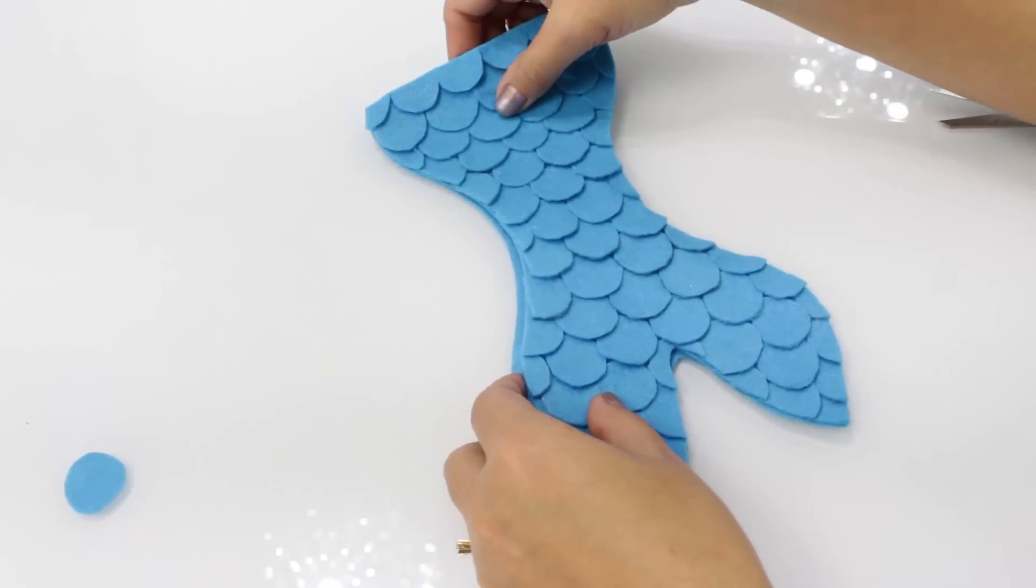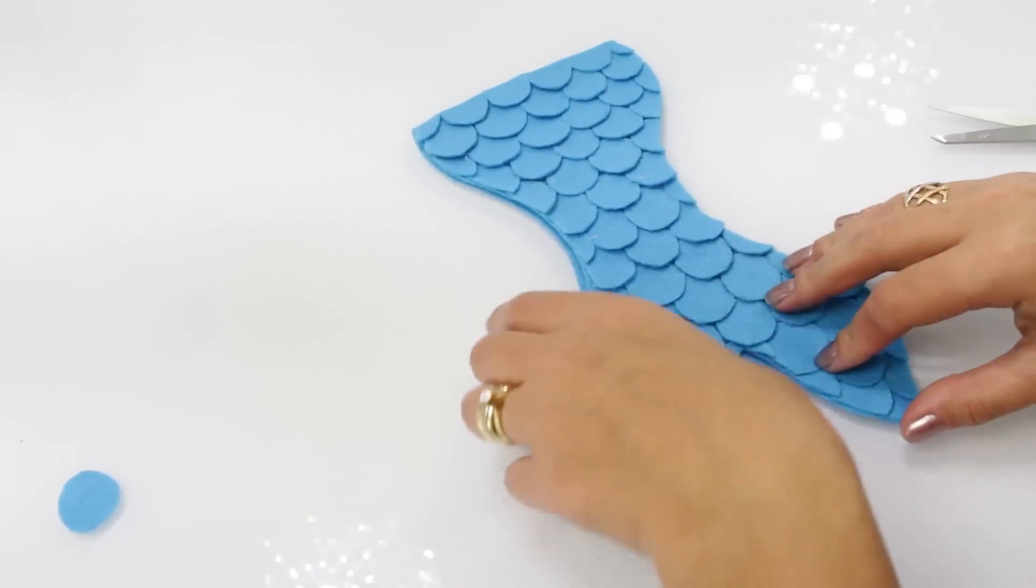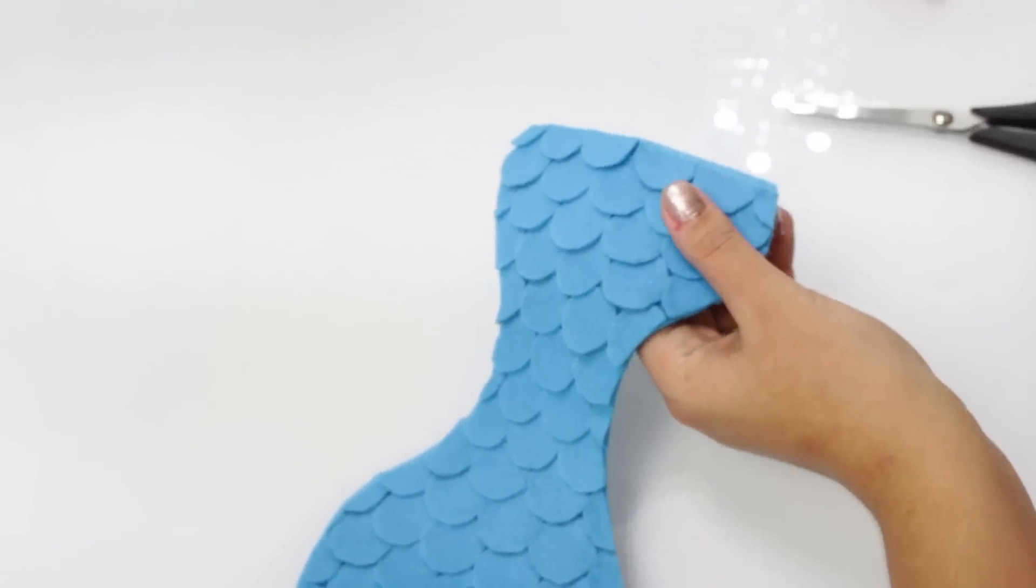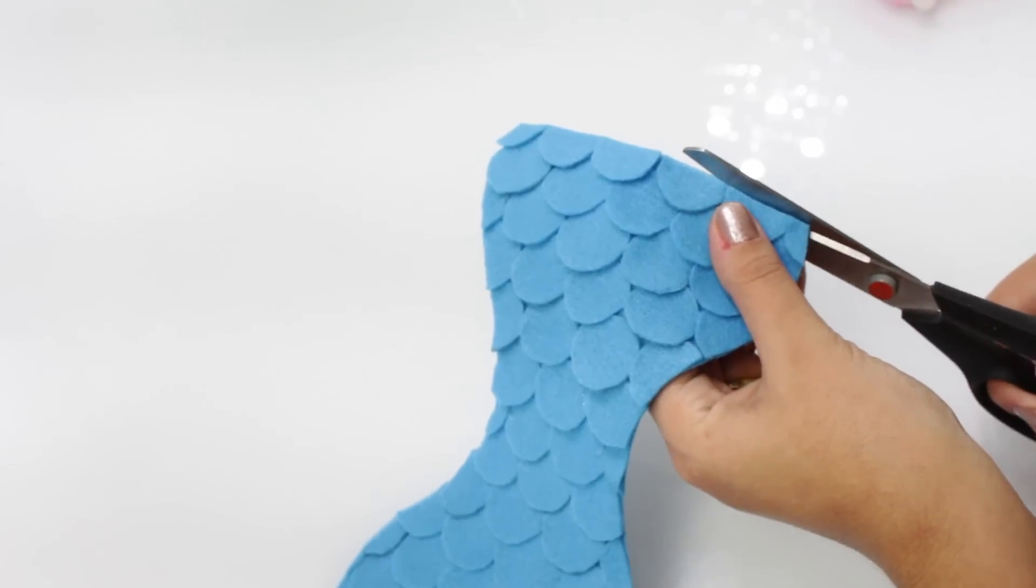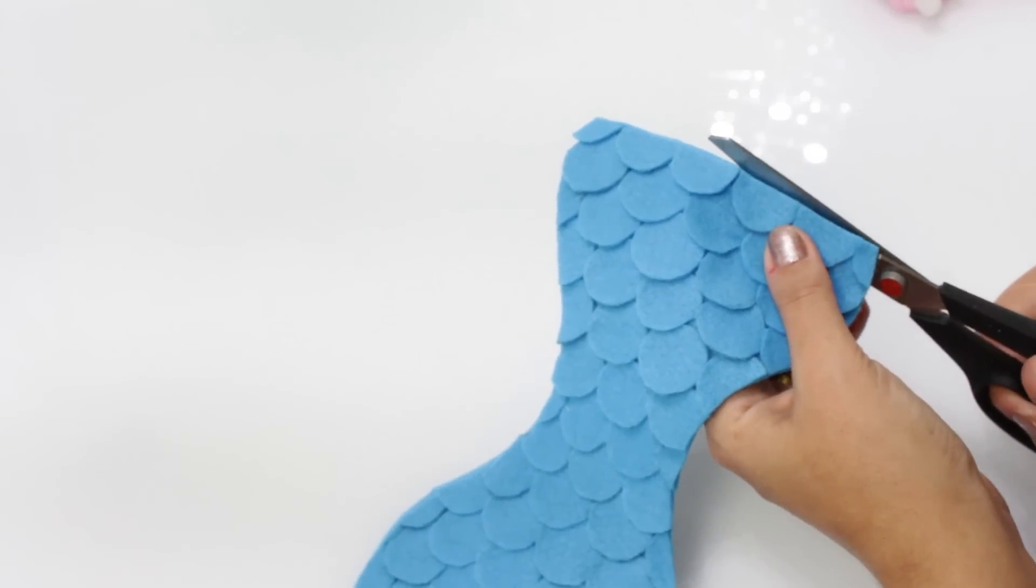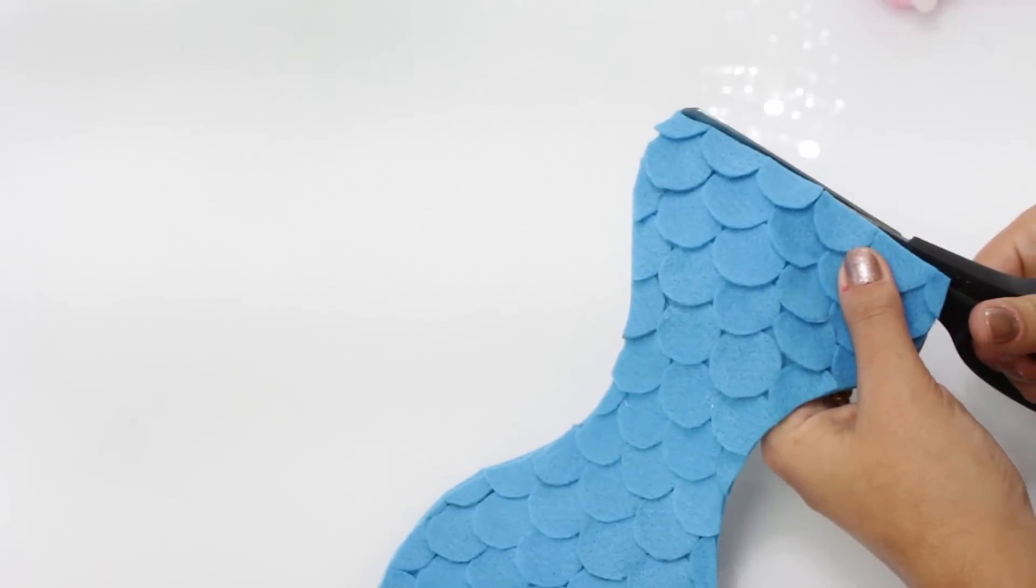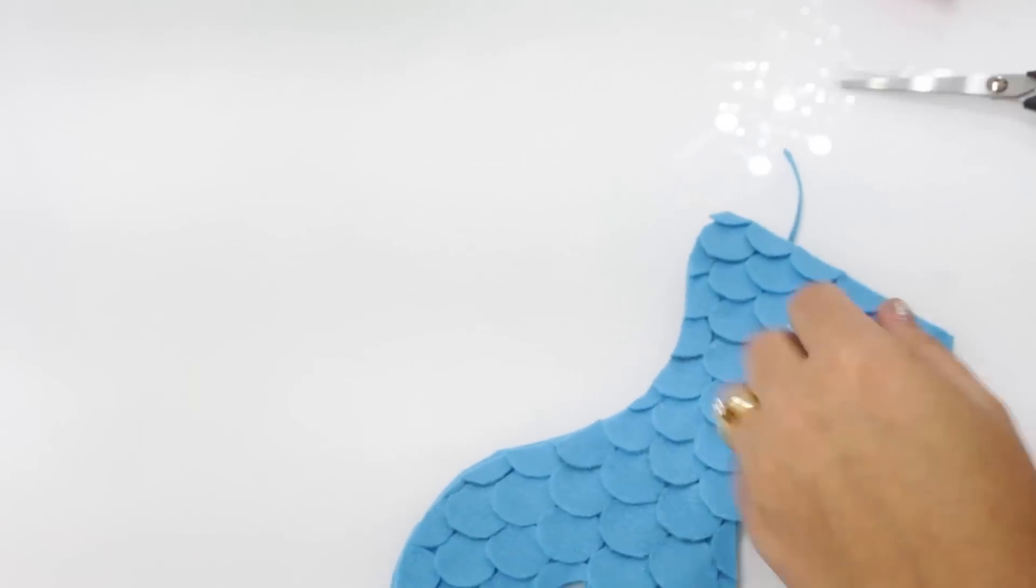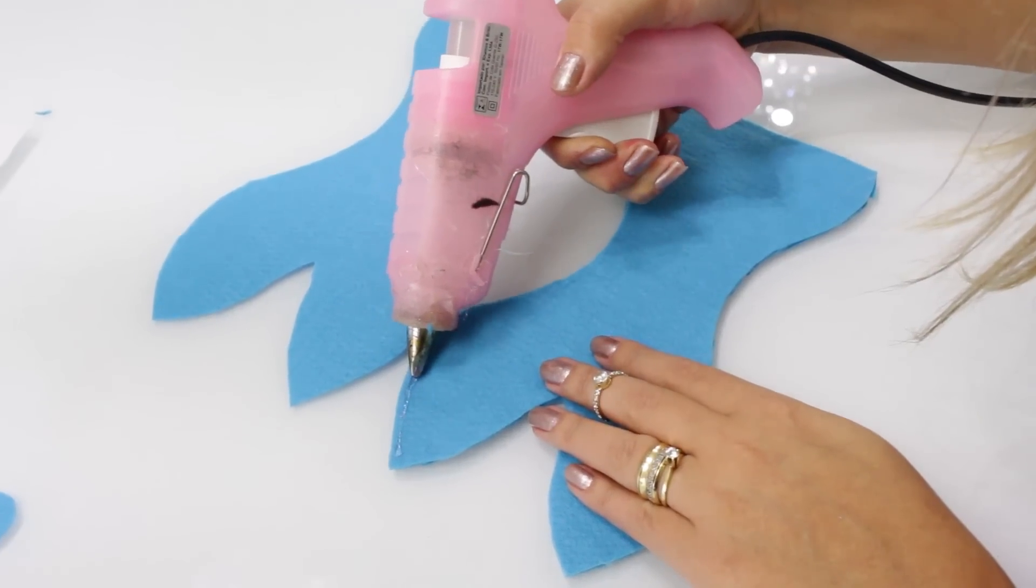Feito isso, agora eu vou vir com o outro pedaço de feltro, aquele que ficou sem nenhuma bolinha. Vou aparar se tiver dado alguma diferença nesse momento que eu fui retirando o excesso das escamas. Aí eu venho e aparo pra deixar os dois lados bem certinho, bem simétrico. E agora sim, com a cola quente, eu venho unindo os dois lados.